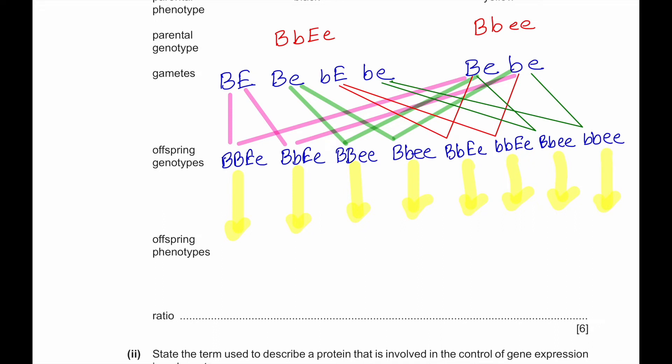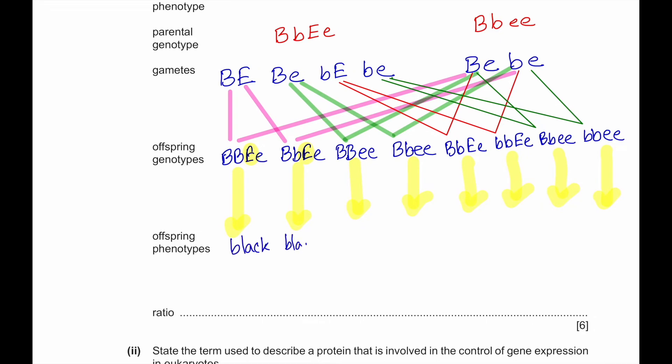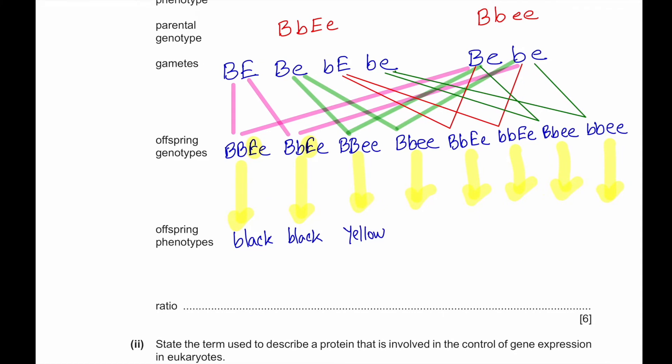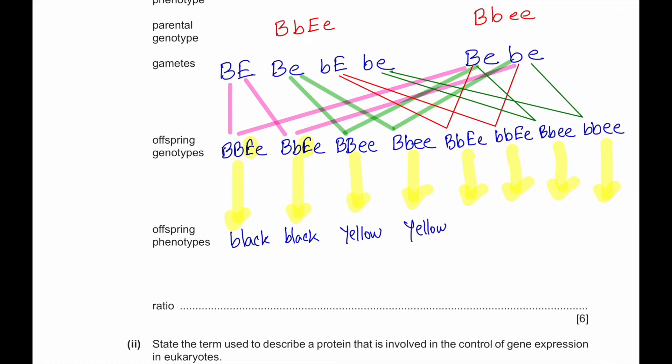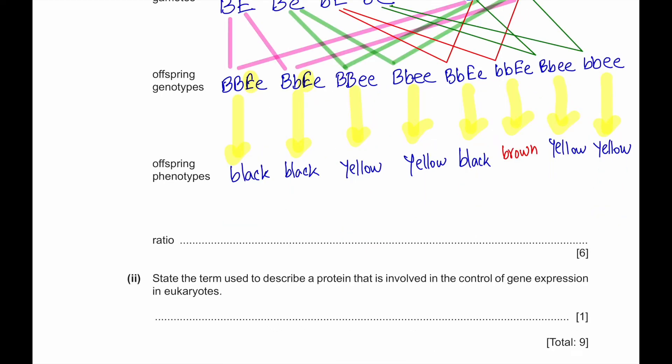Since in the first combinations there is capital E present with capital B, they're going to be black. We're going to get yellow here, another yellow, yellow over here, another yellow, another black, and finally one brown. So we get a ratio of three blacks, four yellow, and one brown.